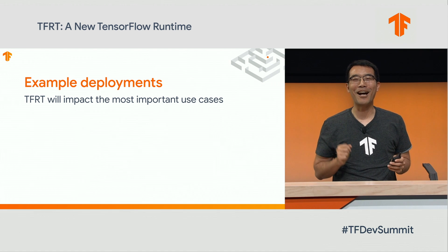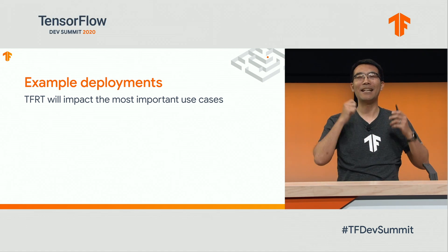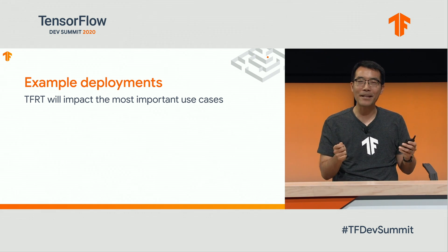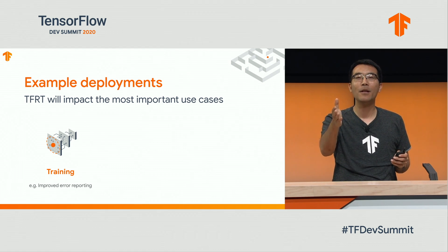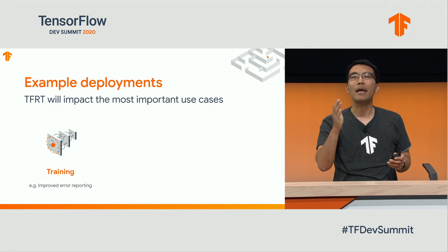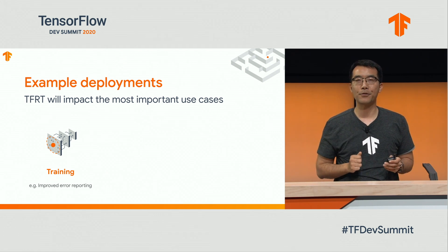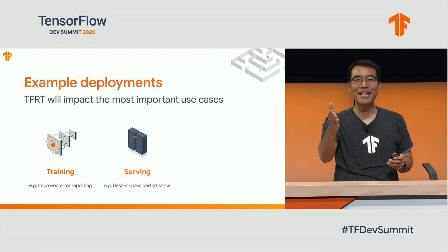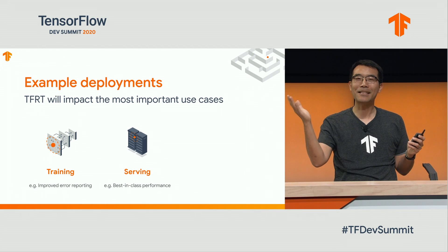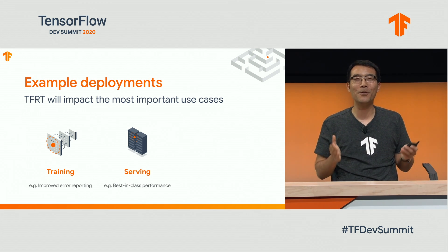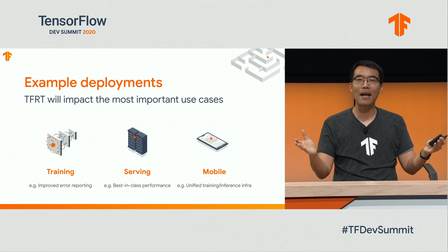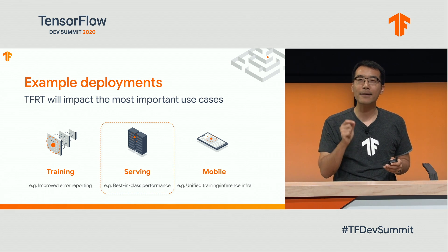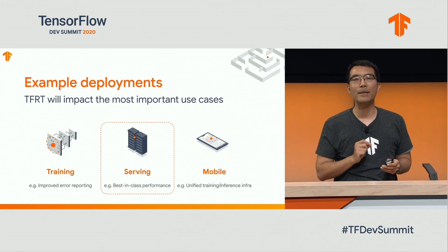Now let's look at how these key design decisions will benefit the core TensorFlow use cases. For those of you who care about training, you will see improved performance as well as error reporting, and that should make it easier to debug your models. If you deploy TensorFlow models in production, you will be glad to see improved performance and reduced CPU usage, and I will show you in a benchmarking study shortly. TFRT will also support deployments across diverse hardware platforms, and in the next couple of slides I will show you some initial results on serving support.